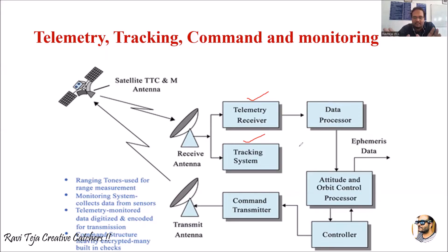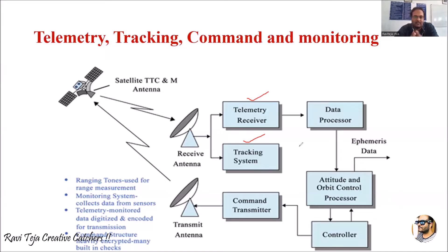The attitude and orbit control processor deals with everything about the satellite — position, direction, movement, data transmission and receiving. Once the attitude and orbit control processor processes the data, you get the pure form of data which we consider as ephemeris data. If you want to send data to the satellite, the attitude and orbit control processor processes the data and gives it to a controller, which sends it to the command transmitter. The command transmitter, with the help of a transmitting antenna, uplinks the data to the particular satellite. The telemetry, tracking, command and monitoring system looks after all of this — both receiving and transmitting — with the attitude and orbit control processor as the major component.